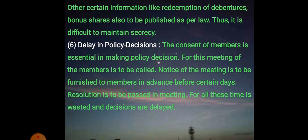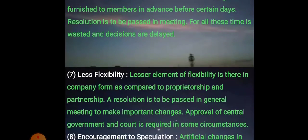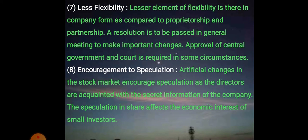First, notice must be published to all members, then a resolution is passed in the meeting and consent of every member is taken before any policy decision is made. In a sole proprietorship the decision is taken by the owner only, and in a partnership by the owners only. But in a company, because ownership and management are separate, the decision-making process takes time. This also results in less flexibility — there is a lesser element of flexibility in the company form compared to proprietorship and partnership.